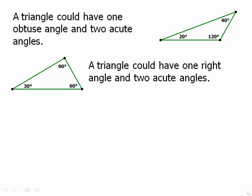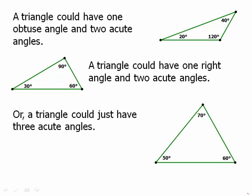A triangle could have one right angle and two acute angles. Here's a 30, 60, 90 triangle. Or a triangle could have three acute angles. So, 50, 60, and 70 degrees.